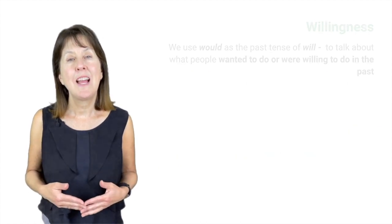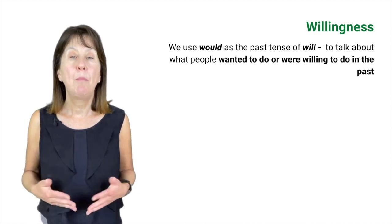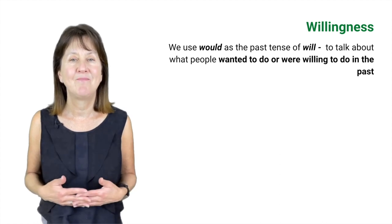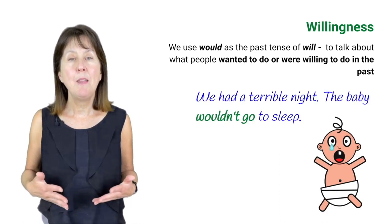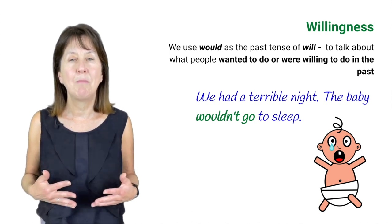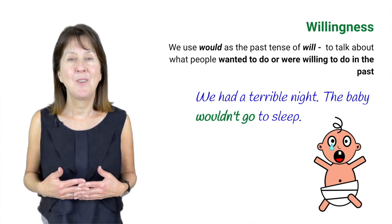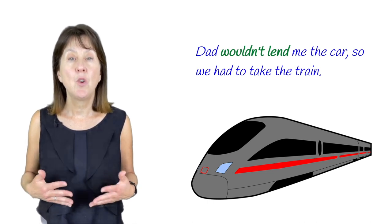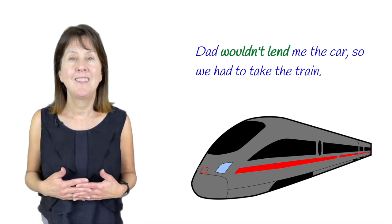We use would as the past tense of will to talk about what people wanted to do or were willing to do in the past. For example, 'We had a terrible night — the baby wouldn't go to sleep.' The baby didn't want to go to sleep. 'Dad wouldn't lend me the car so we had to take the train' — dad wasn't willing to lend the car.